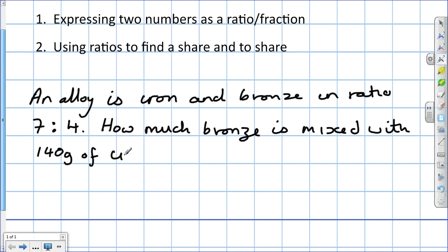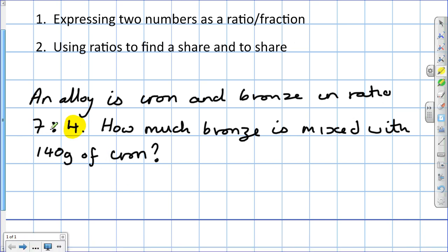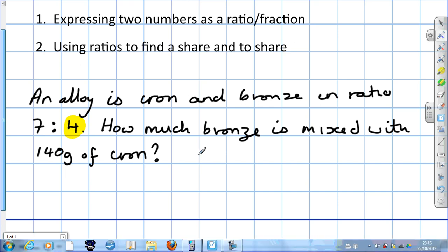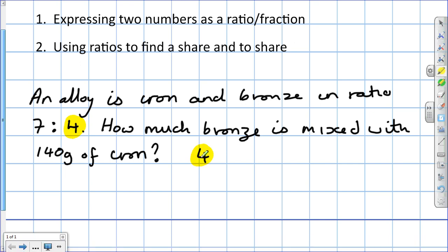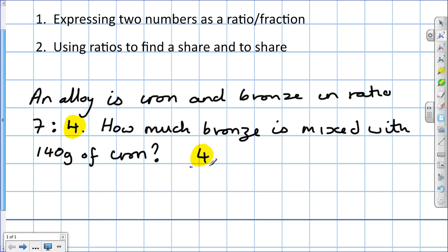What is it we're trying to find? We're trying to find how much bronze. Bronze is the second figure in the ratio. So that's the first part of our fraction. What's the second figure in the ratio? It's 7. So that's the second number we use, the denominator. What's the other number we haven't used? It's this 140. So we do 4 over 7 times 140 grams. And if you get your calculator out, you'd find it's 80 grams.